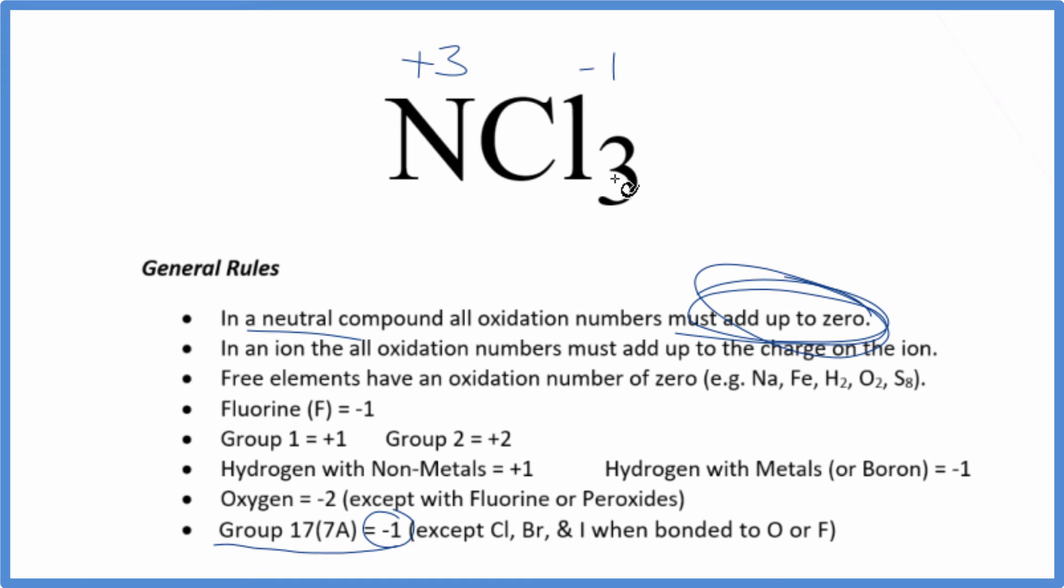So we can check our work. 3 times minus 1, that's minus 3. Minus 3 and plus 3, we have zero.